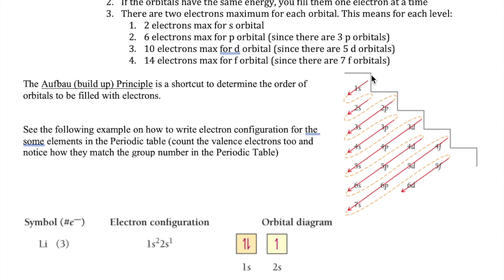You read the Aufbau diagram as follows: start with the 1s orbital, then the 2s, then the 2p, then 3s, 3p, 4s, 3d, 4p, and so on. The way you generate this diagram is by writing all your S orbitals first, then P, then D, then F, and creating the diagonal pattern shown.